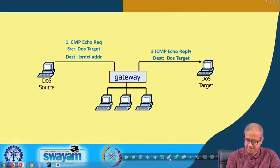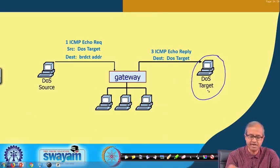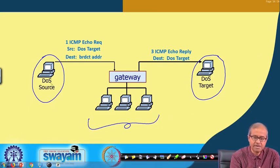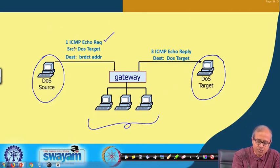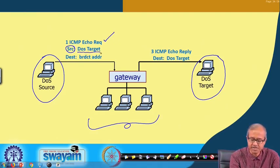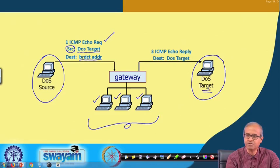Pictorially, this is what I just mentioned. Let's say this is the host which the attacker is trying to attack, and the attacker is sitting here. This is a network — let's say there are three computers here as a small example. What the attacker does is send one ICMP echo request packet with the source address spoofed using IP spoofing — changing it to the DoS target — and the destination is the broadcast address of this network. So it reaches all three computers and they all send echo reply packets targeted to the DoS target.